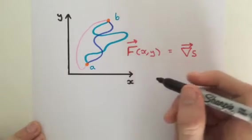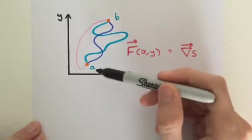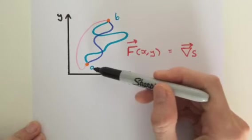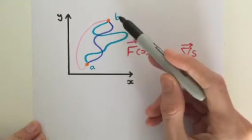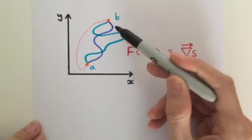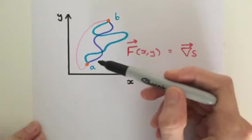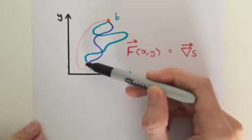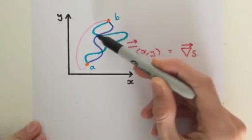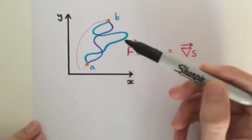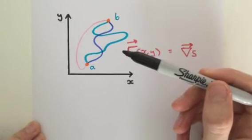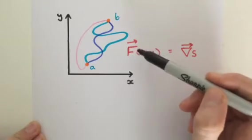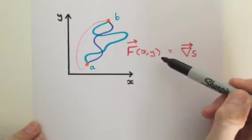Let's say we have two points on the x-y plane, point A and point B. And let's say we draw a curve from point A to point B. Let's say it's this light blue curve here. And let's say this curve is in a vector field F, which is a function of x and y.